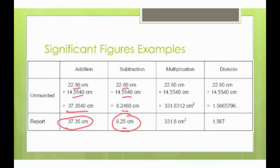With multiplication and division, you're looking at the lowest number of significant figures altogether. So, this number has 4, this number has 6. When you multiply, you end up getting this answer, but 4 significant figures is your lowest, and therefore, 331.8 is the answer with significant figures.